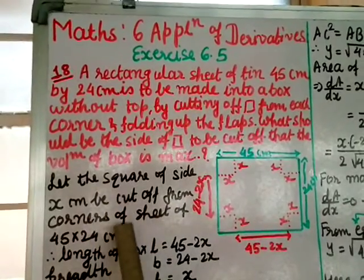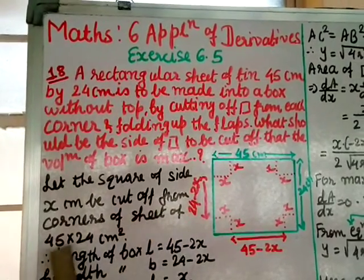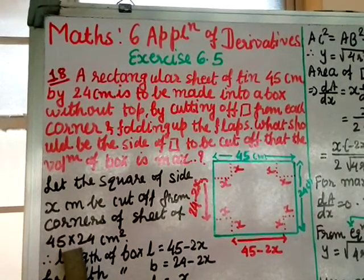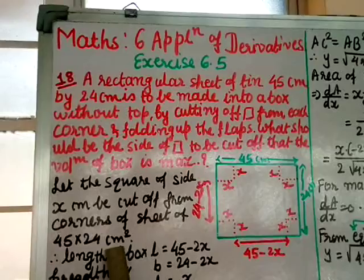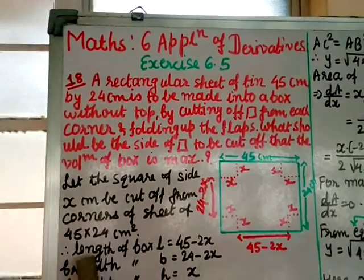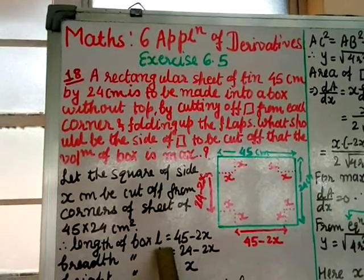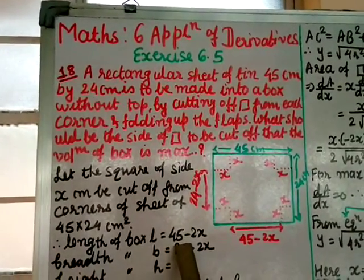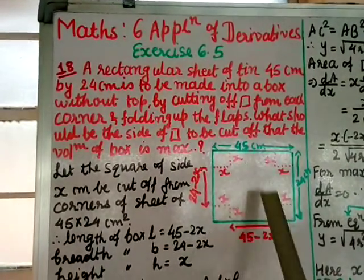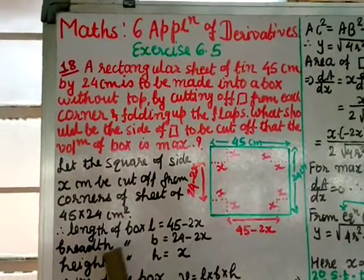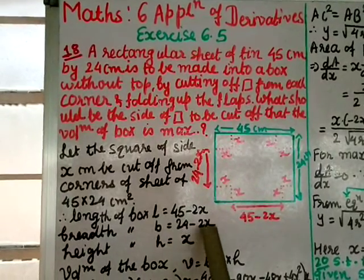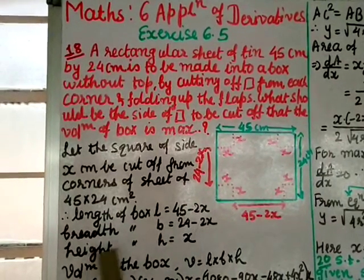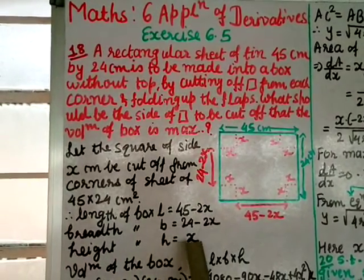Let the square of side x cm be cut off from corners of the sheet of 45 by 24 cm. Therefore, the length of the box L will be 45 minus 2x, breadth B will be 24 minus 2x, and height h will be x.